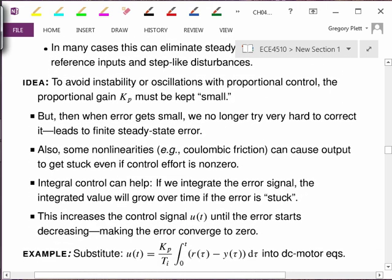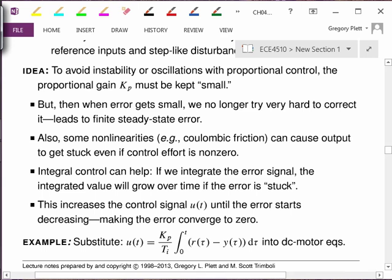Remember from our prior example that to avoid oscillations and sometimes even instability when using proportional control, which was the previous topic, the gain that we used had to be kept small. But when the error gets small, we're not multiplying by a very big gain. We have a small error and a small gain. That means that we're not really trying very hard to correct the error, and that can lead to this finite steady-state error.